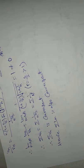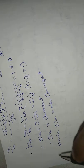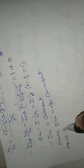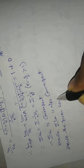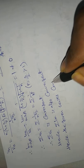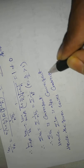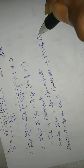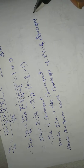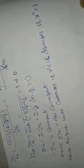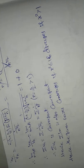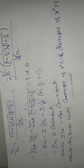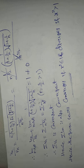Therefore, the given series is convergent when x² ≤ 1 and diverges when x² > 1. This is a very important problem. Please subscribe, like, share, and thank you.